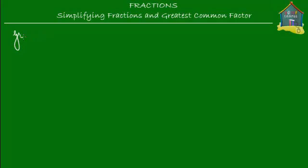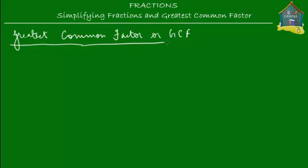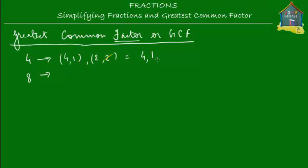Greatest common factor, or GCF. As the name says, it is the greatest of the common factors. Let's find the greatest common factor of 4 and 8. For that, we first find out the factors of 4 and 8. The factors of 4 are: 4 and 1, because 4 times 1 gives you 4; and also 2, because 2 times 2 gives you 4. So the factors of 4 are 4, 1, and 2.